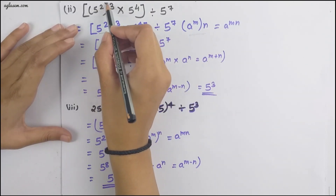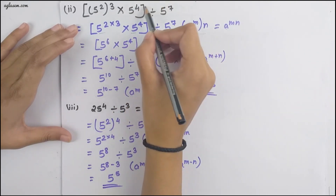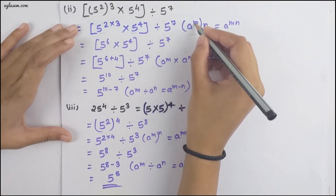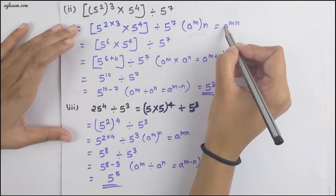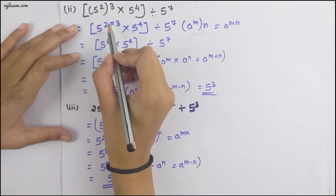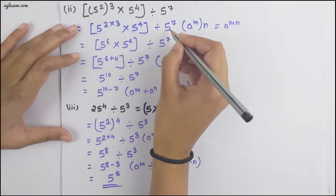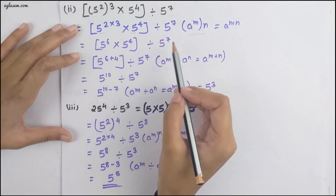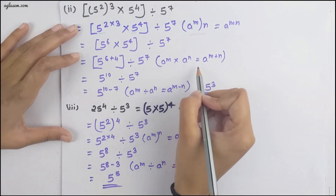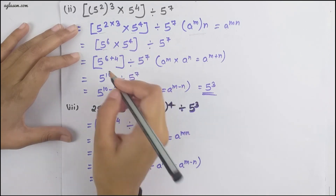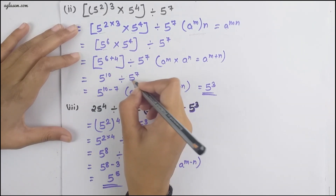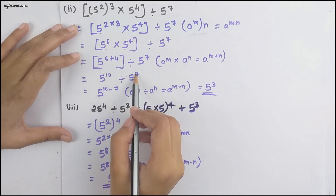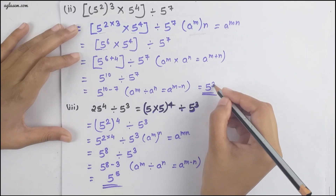Moving to the second part of the same question: (5²)³ × 5⁴ ÷ 5⁷. First, using (a^m)^n = a^(m×n), we get 5^(2×3) = 5⁶. Then 5⁶ × 5⁴ ÷ 5⁷ — since the base is the same, we add powers in the numerator: 5^(6+4) = 5¹⁰. Then dividing, we subtract powers: 5^(10−7) = 5 raised to the power 3 as our answer.